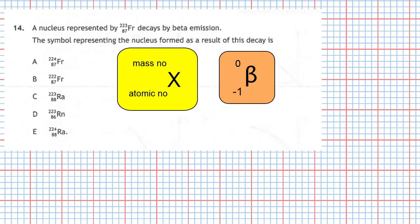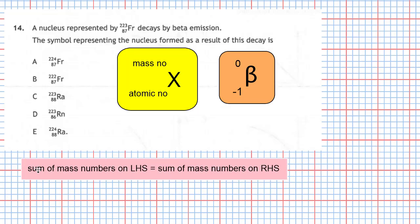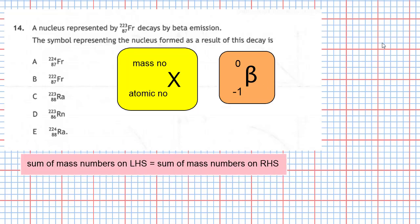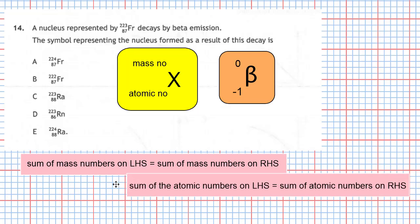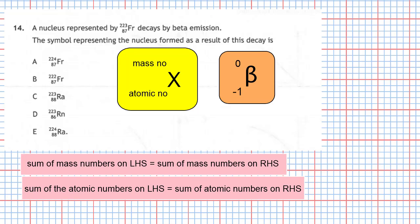The key for these equations is the following: the sum of the mass numbers on the left-hand side of a nuclear equation must equal the sum of the mass numbers on the right-hand side. Similarly, the sum of the atomic numbers on the left-hand side must equal the sum of the atomic numbers on the right-hand side.